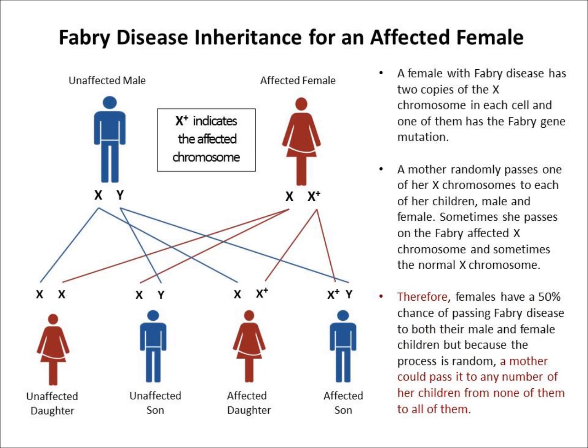This slide shows how a female with Fabry disease passes it to her children. When a female has Fabry disease, one of the female's two X chromosomes in each cell is affected and one is normal. Since a mother randomly passes one of her two X chromosomes to each of her children, she has a 50% chance of passing the affected X chromosome to each child, male or female. However, because the process is random, a female could pass Fabry disease to none of her children, to all of her children, or to any number of her children in between.